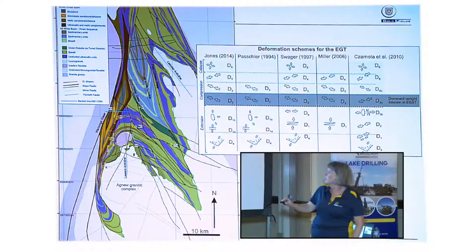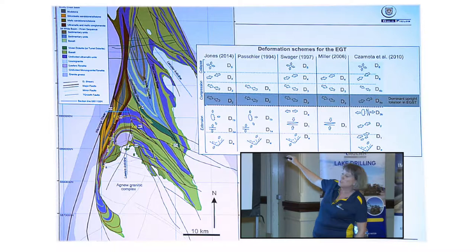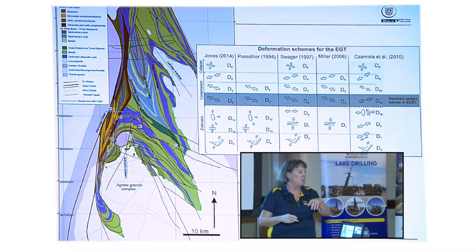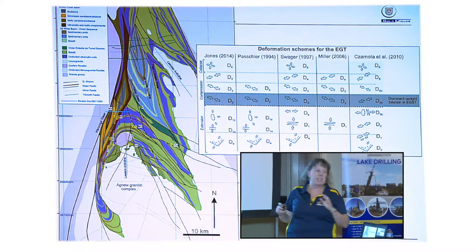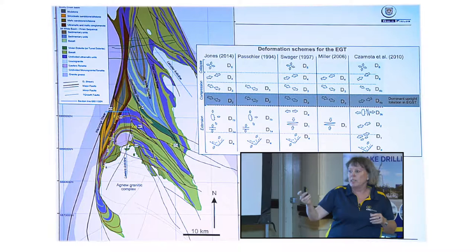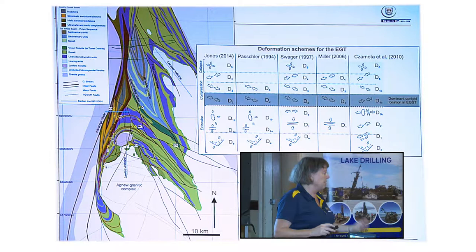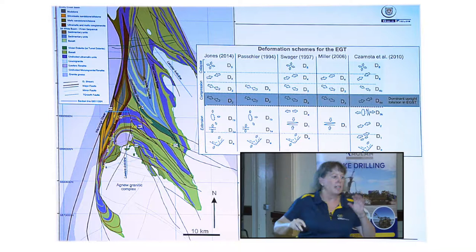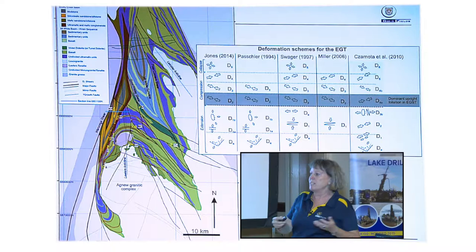I'm going to take you through what we're seeing in the regional deformation sequence. Right through the eastern goldfields, no matter whose scheme you use, the D2 event—where we squash the whole eastern goldfields and form those upright folds and that steep north-trending foliation—is the best linchpin for working out what's relatively earlier and later. Is your deformation before that event, or is it after it? That's the easiest way to handle your deformation sequences.